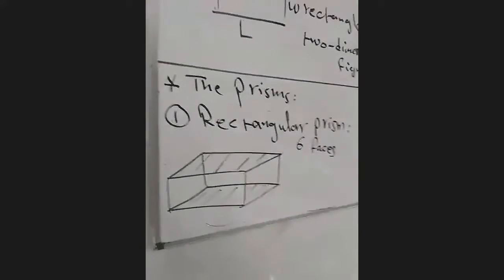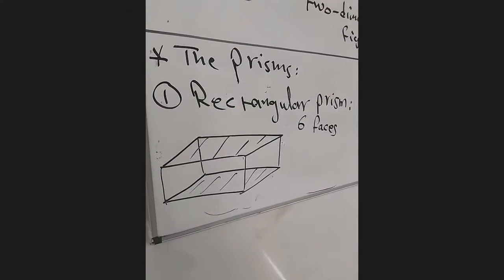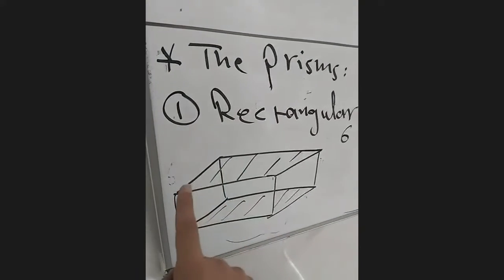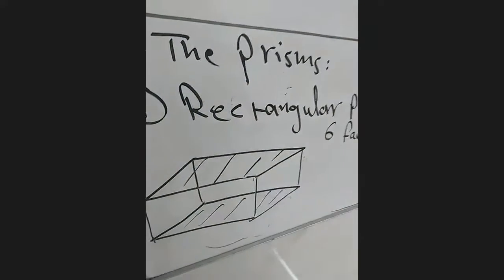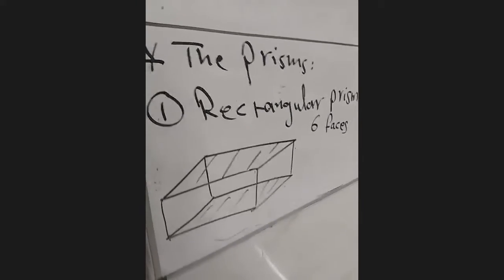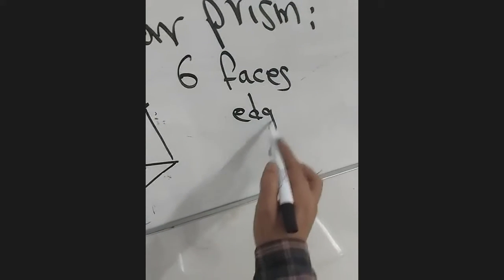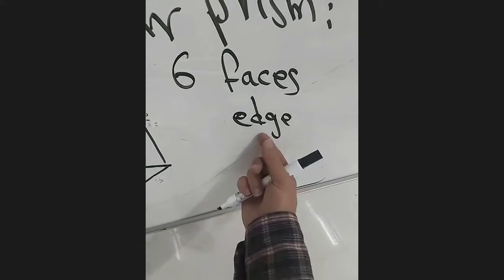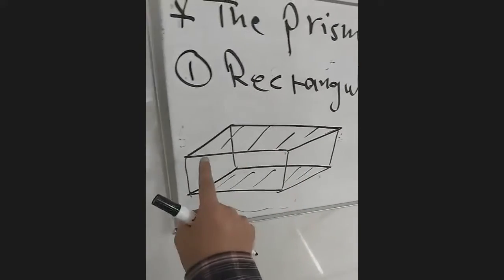Now we have the parts of this rectangular prism. It can be thought of as formed from six faces: one face up, one face down, and the four faces around on the sides. It also has edges — these line segments. We call each line segment an edge. The 'D' at the end is very light: edge.